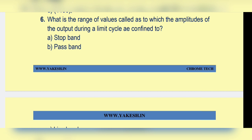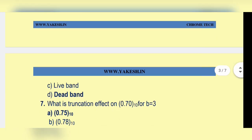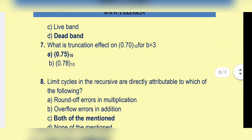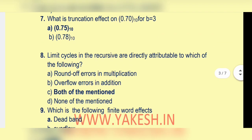What is the range of values called as the amplitude of the output during a limit cycle confined to? Option d: dead band. What is the truncation of 0.70 base 10 for b equal to 3? Option a: 0.75 base 10.